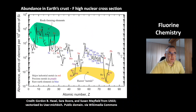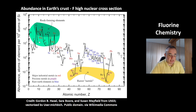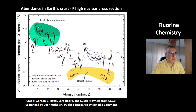This is a picture of the abundance of elements in our crust. Fluorine is here. As an element with an odd number of protons, it has a higher nuclear cross-section. This means it is more vulnerable to nuclear reactions that can destroy fluorine, for example if it's hit by a proton. That's why, in comparison to oxygen, fluorine is about one thousand times less abundant.